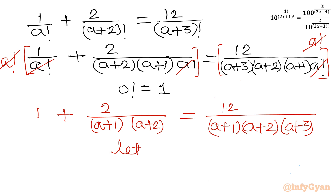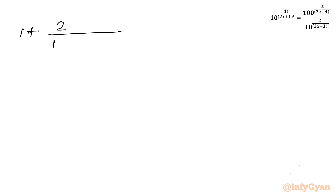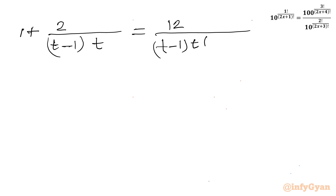Now let us assume a+2 equal to t. The condition on a was a ≥ 0, so the condition on t is t ≥ 2. Then a+1 becomes t-1 and a+3 becomes t+1. So our equation becomes: 1 plus 2 over [(t-1)×t] equal to 12 divided by [(t-1) × t × (t+1)].